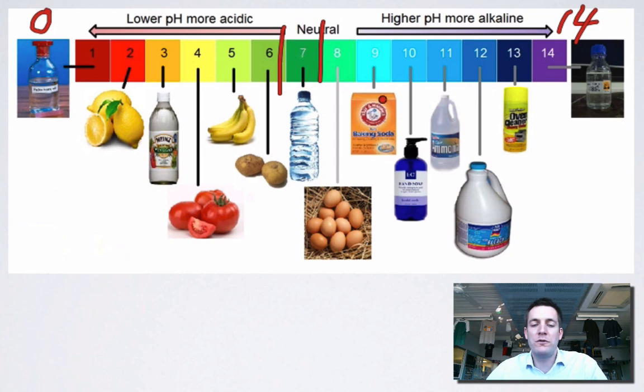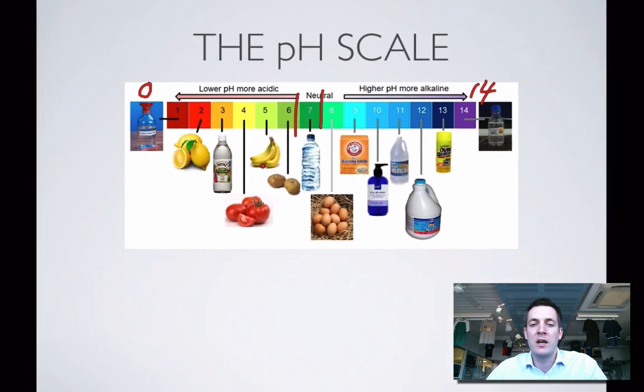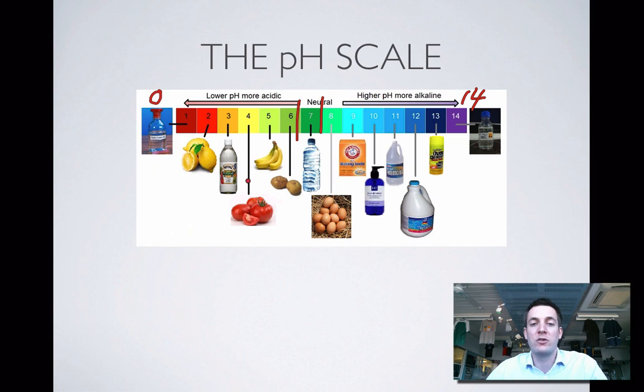So going from 0 to 14 with low numbers, like laboratory acids 0 and 1 being very acidic, things like tomatoes being not quite as acidic as that but also acidic with a pH of about 4, and then we've got things like oven cleaners which have quite high pHs or therefore are very basic.